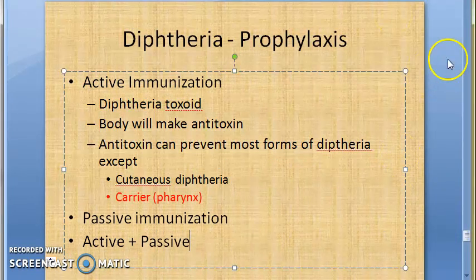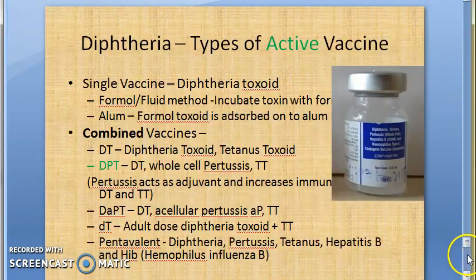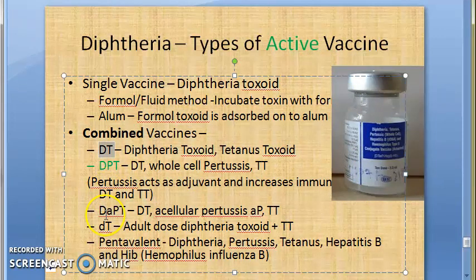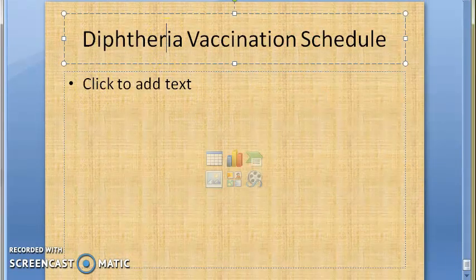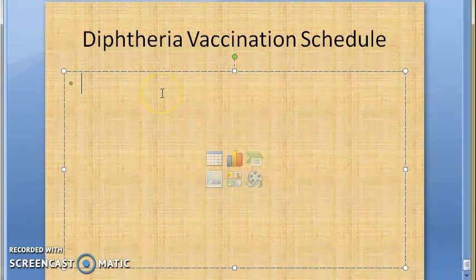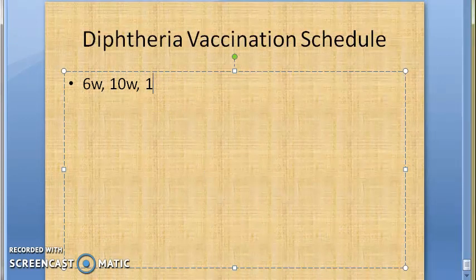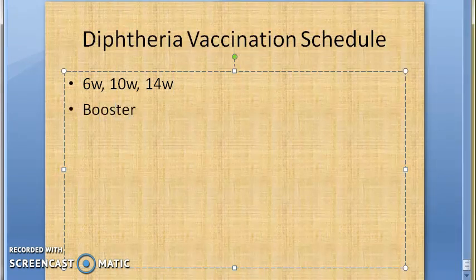Active vaccine types we finished: DT, DPT, DTaP, small-d capital-T, pentavalent. The vaccination schedule is important. You will give three primary doses at 6 weeks, 10 weeks, and 14 weeks of birth, followed by two booster doses - boosters are given at 16 to 24 months and at 5 years - five doses totally.